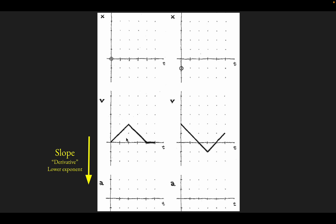For the first two seconds of time — this would be one second, this would be two — the slope is one. So we can just plot a constant acceleration of one for the first two seconds. From t equals two seconds to t equals four, this downward sloping line on the velocity graph has a slope of negative one, so the acceleration is negative one for that time interval. And then finally, between t equals four seconds and t equals five, the velocity is always zero, so that means the acceleration is zero. The slope was one for the first two seconds, negative one for the next two, and then zero for the last second.